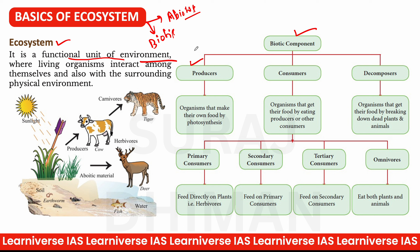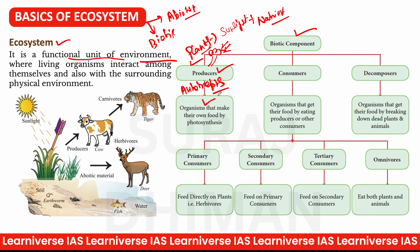Producer वो होता है जो produce करता है, जैसे plants। Plants sunlight की help लेते हैं, soil से nutrients लेते हैं, और उनकी help से grow करते हैं। इनको autotrophs भी कहा जाता है — वो जो खुद खाना बना सकते हैं। अब बारी आती है consumer की — जो अपना खाना नहीं बना सकते जैसे humans। They are dependent on plants and other autotrophs। तो humans are consumers।